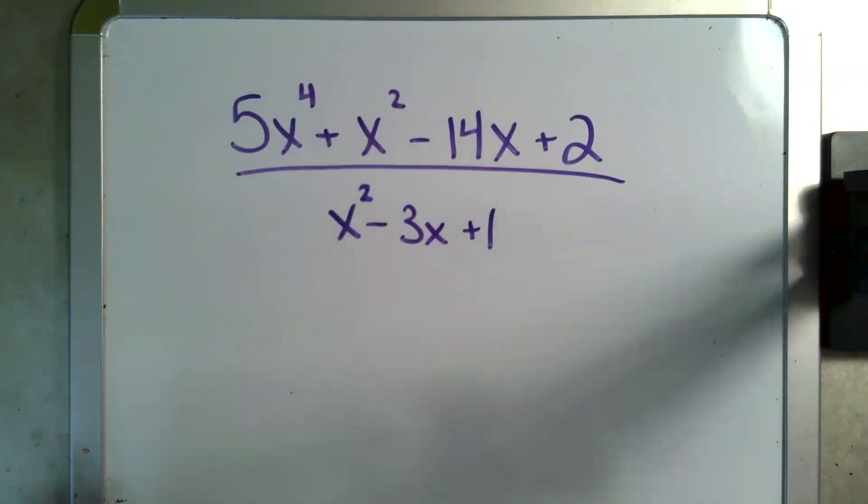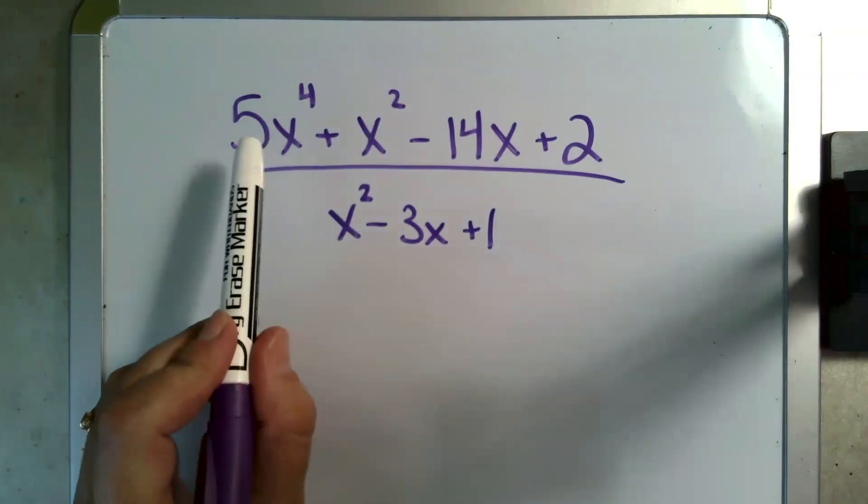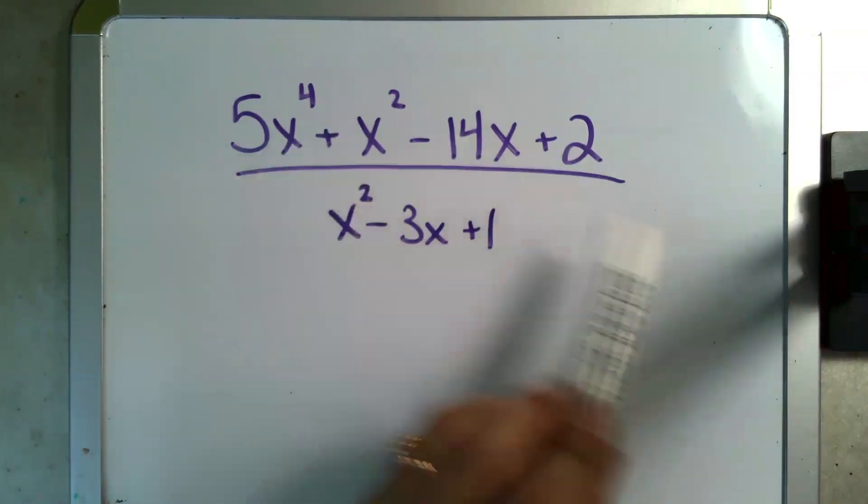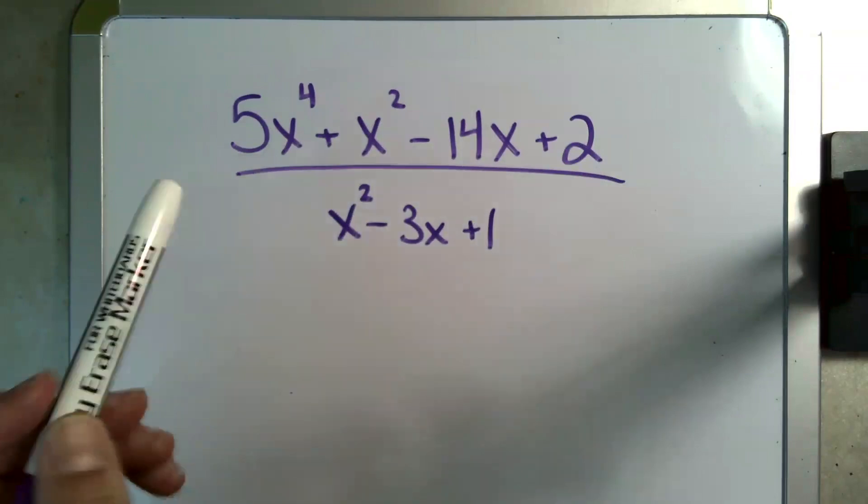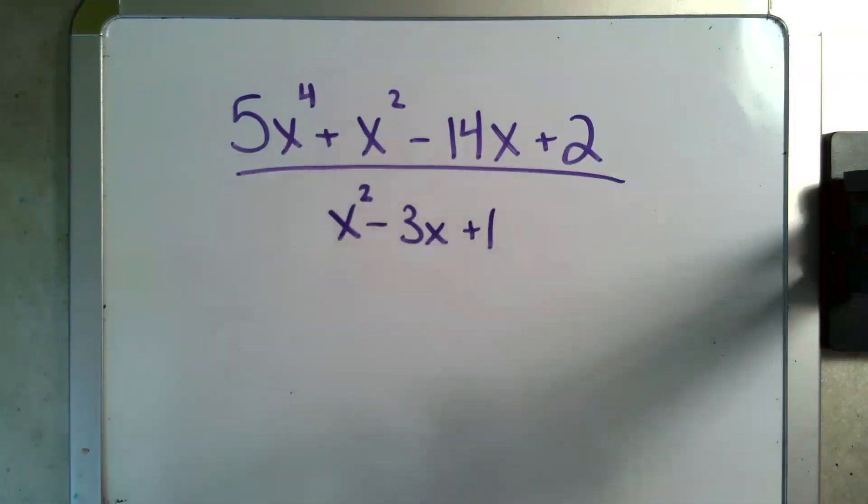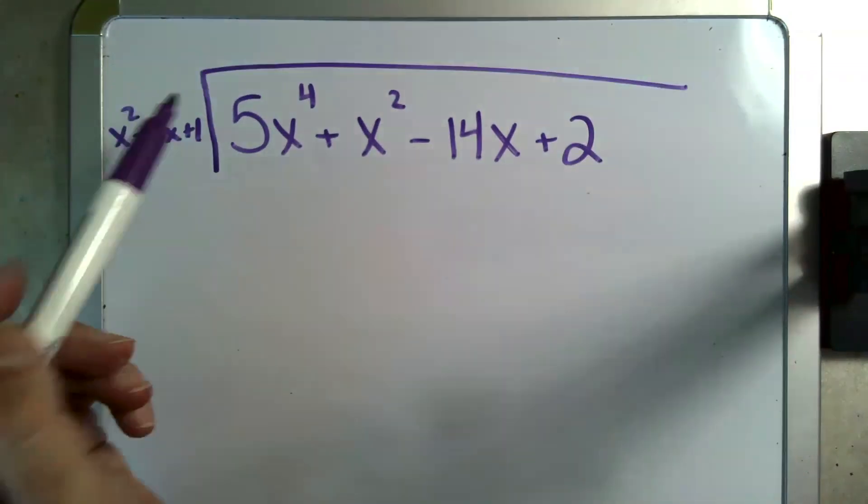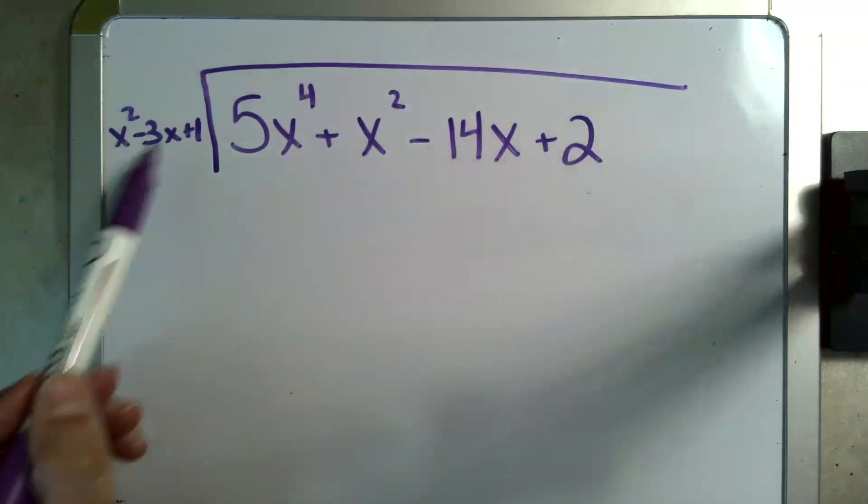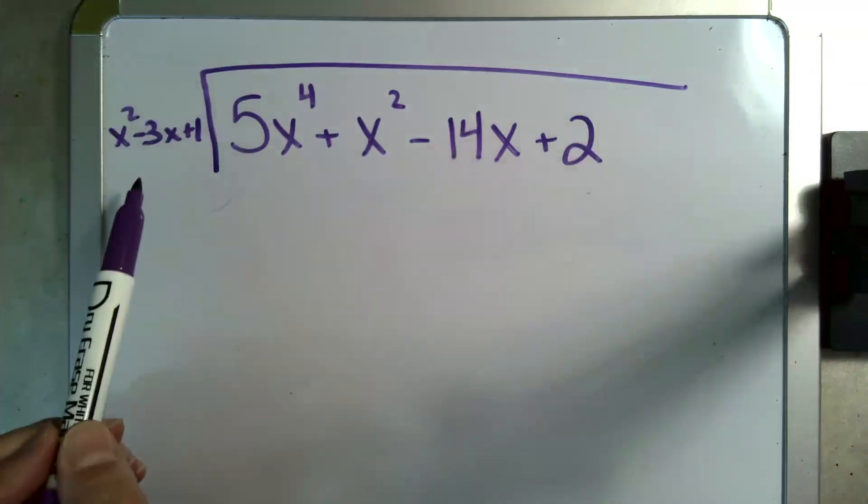All right, so let's say that this is our problem. We've got this big long polynomial divided by this polynomial. The first two things we're going to do are as follows. First, instead of writing this as a fraction, we're going to write this under the traditional division sign. So I've got my division sign here and I moved my polynomial over here.